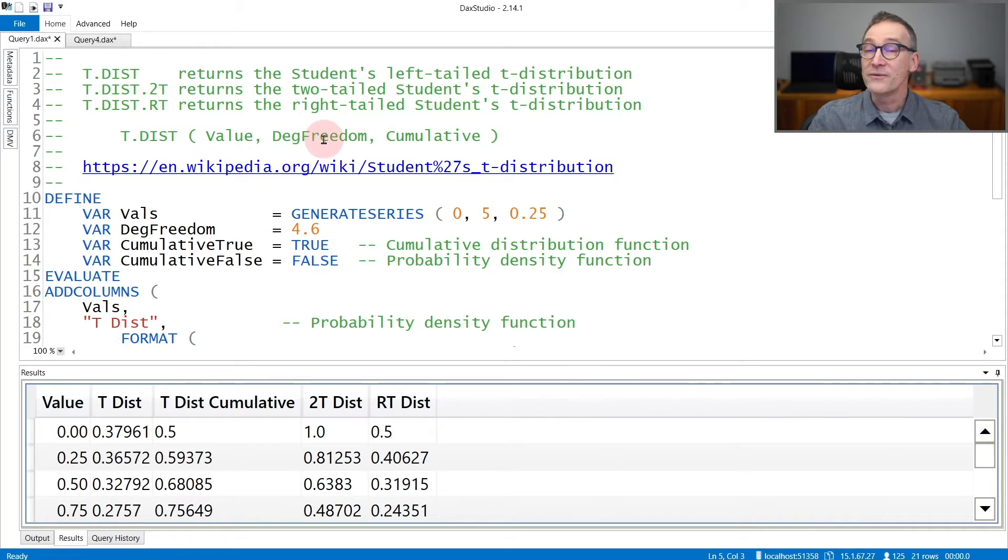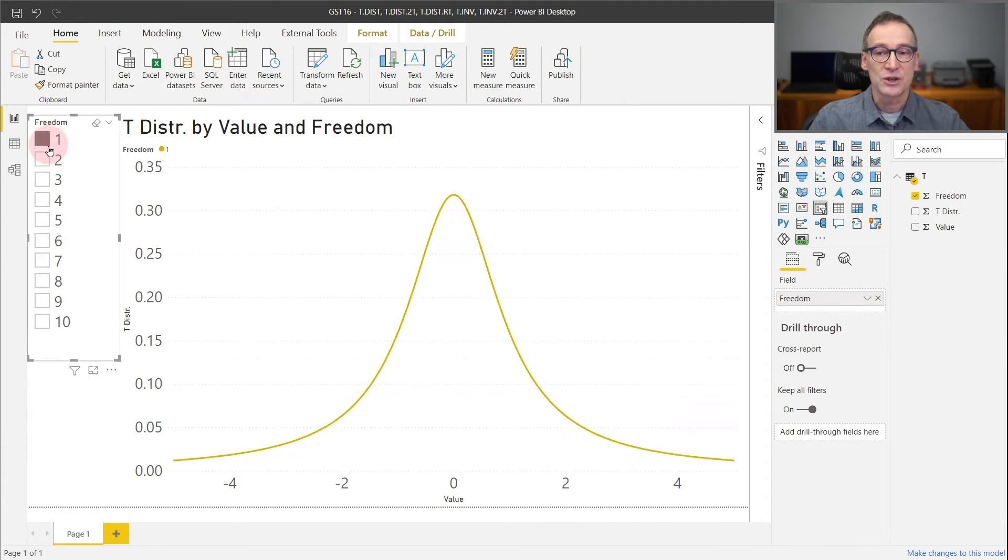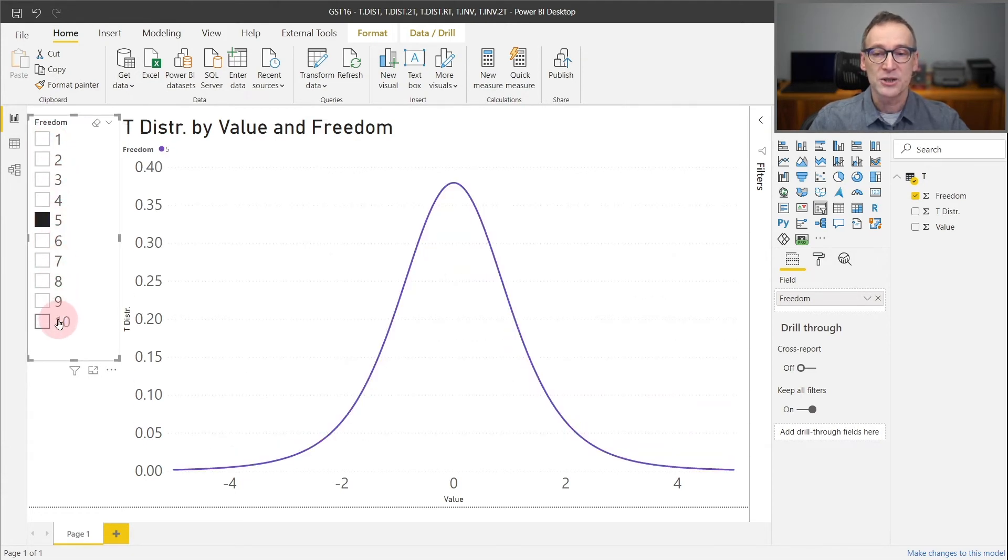It is useful to look at how different values of degree of freedom change the shape of the Student's t-distribution. In this chart, I'm right now showing the Student's t-distribution with 5 for the degree of freedom. You can change it to different values and you see that the shape changes.